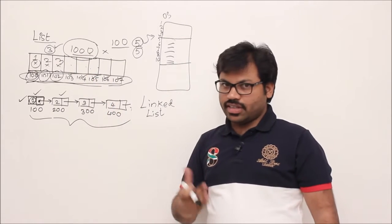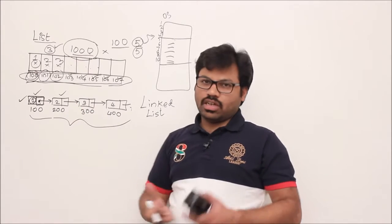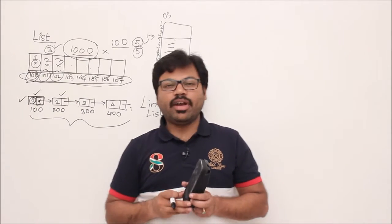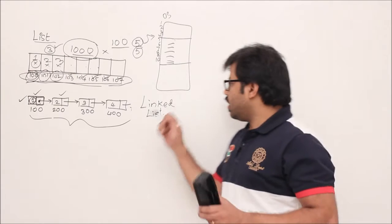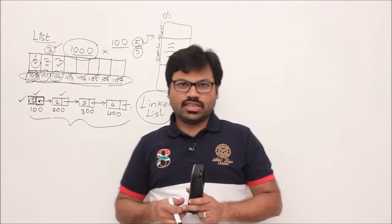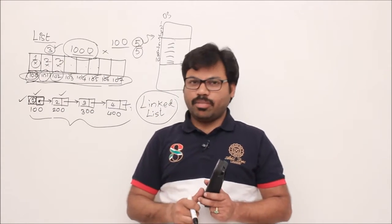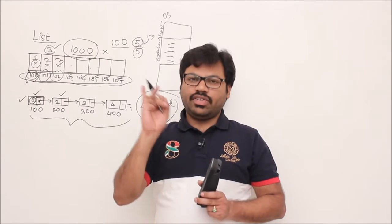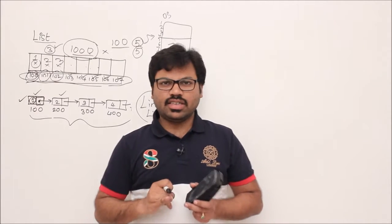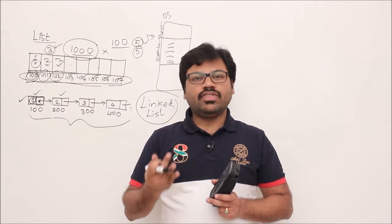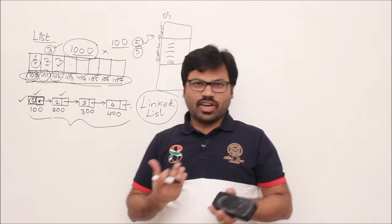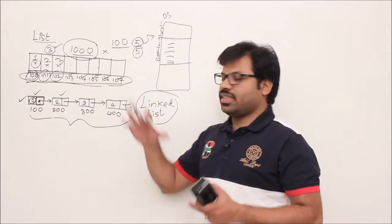In the non-contiguous model, to go from address 100 to the next node (say at 200), we don't automatically know it's at 200. We need a mechanism to remember the next node's address — that's why we maintain one extra box where we store the next box's address. That's why we call it a linked list: we are linking the list. So finally there are two models: contiguous (also known as array) and non-contiguous (also known as linked list). A linked list data structure can be implemented in three major ways: single linked list, double linked list, and circular linked list.